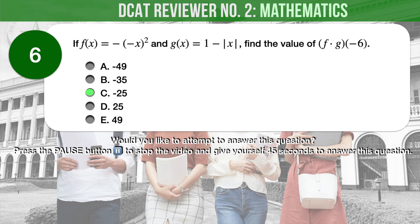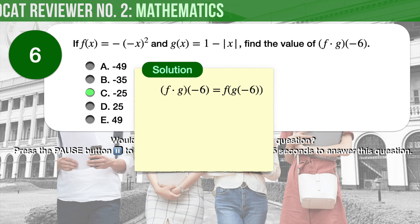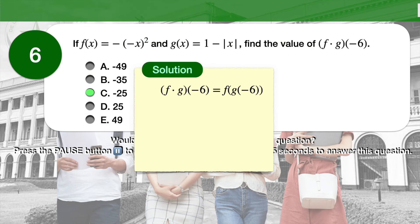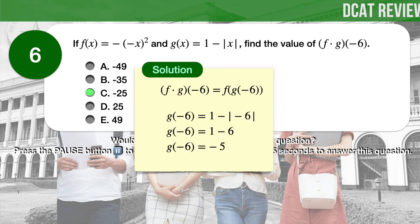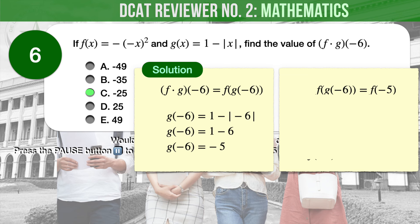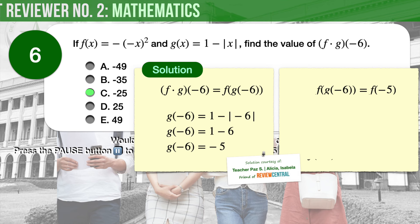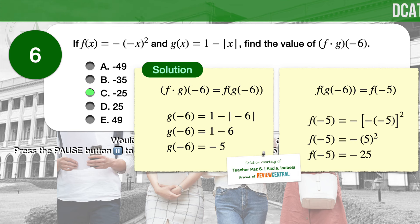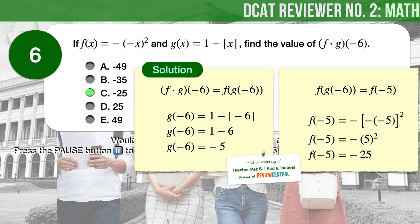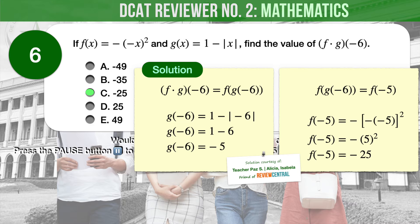The correct answer is C: negative 25. The function f∘g(negative 6) can be expressed as f(g(negative 6)). First, solve for g(negative 6): 1 minus the absolute value of negative 6, which gives negative 5. Therefore, f(g(negative 6)) equals f(negative 5). Now solve f(negative 5): negative of the square of the quantity negative negative 5, which results in negative 25. Therefore, f∘g(negative 6) equals negative 25.